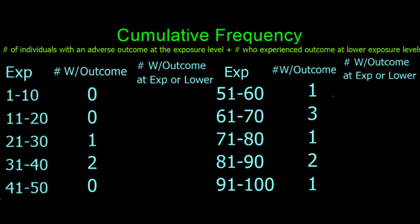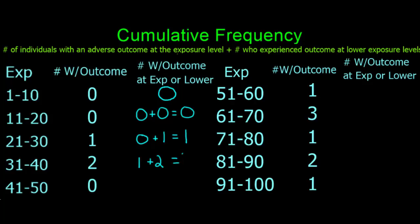For each exposure range, add together the number of individuals who experienced an adverse outcome at the exposure level, plus the number who experienced an adverse outcome at each lower level of exposure, to determine a cumulative number of learners who could not go beyond this exposure range. Nobody experienced the adverse outcome in the exposure range of 1 to 10, and there is also no one in the range 11 to 20; therefore, 0 plus 0 equals 0. One person experienced an adverse outcome in the range 21 to 30; therefore, 0 plus 1 equals 1. Two people experienced an adverse outcome in the range 31 to 40. We then add all individuals who experienced an adverse outcome in the previous exposure ranges — in this case 1 — with the two individuals in this range, giving us a final tally of 3.